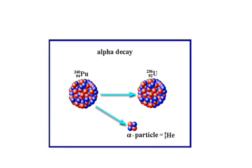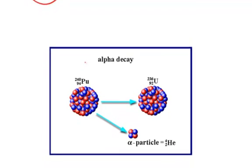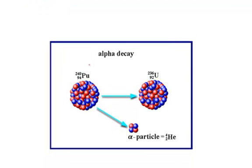Alpha decay, for example, if you have a plutonium-240 isotope, it is an unstable isotope, and that plutonium will spontaneously give off an alpha particle.